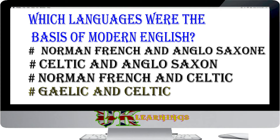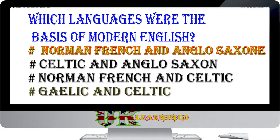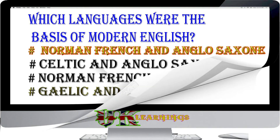Which languages were the basis of modern English? Options: Norman French and Anglo-Saxon; Celtic and Anglo-Saxon; Norman French and Celtic; Gaelic and Celtic. The answer is Norman French and Anglo-Saxon. After the Norman Conquest, the king and his noblemen had spoken Norman French and the peasants had continued to speak Anglo-Saxon. Gradually, these two languages combined to become one English language.